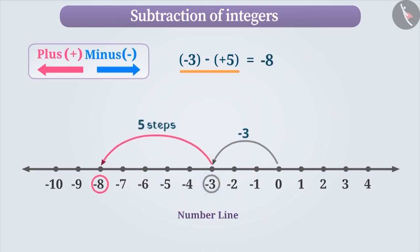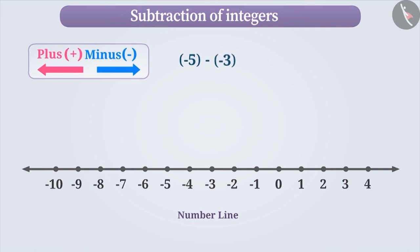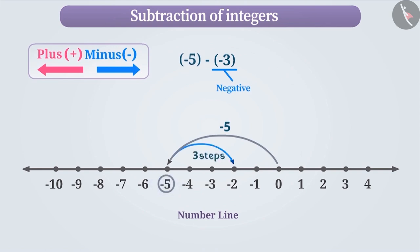Similarly, if we have to find the value of minus 5 minus minus 3, mark minus 5 on the number line, which is five steps towards the left of 0. Since we need to subtract the negative integer minus 3, we move three steps towards the right side of minus 5. Thus, we reach minus 2, which is the result of minus 5 minus minus 3.